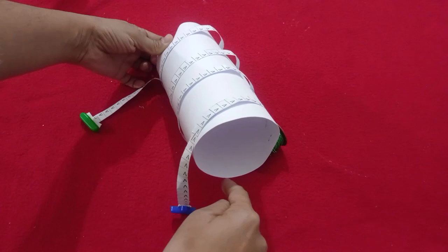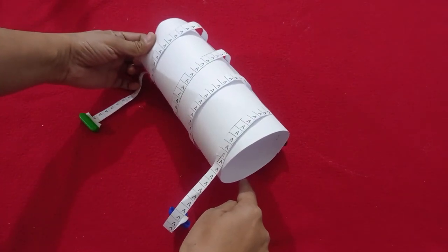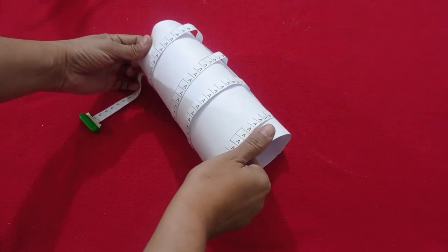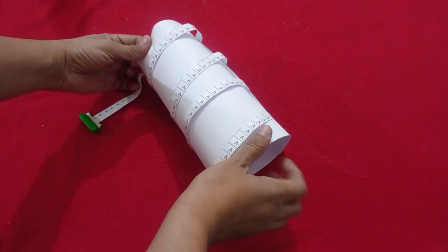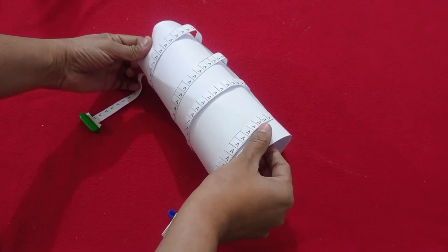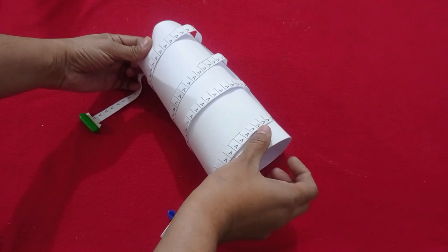Now, let's apply the right-hand thumb rule as discussed in my previous video. Keep the right-hand thumb in the direction of current flow. The curl of our fingers will represent the direction of magnetic field. The curl is actually going inside the coil. So, we know that this end is south pole.